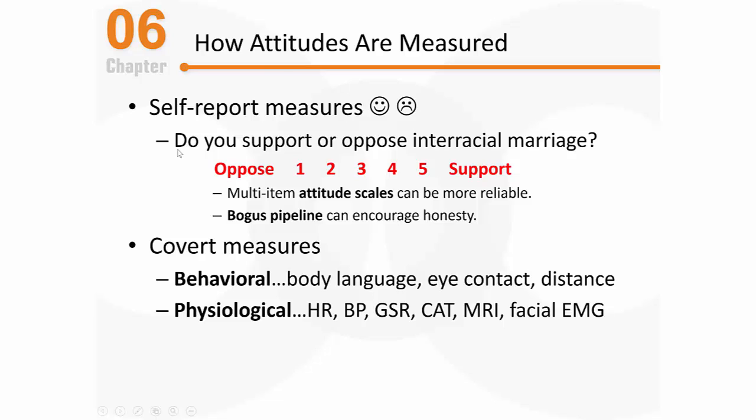Another way to assess attitudes covertly is using cognitive measures. Many cognitive measures rely on people's reaction times, because if you can react very quickly to a question you typically have a relatively strong, firm attitude regarding that topic. So measuring how quickly people respond is predictive of how they feel. That's the exact reasoning behind the IAT — the Implicit Association Test, which we've discussed previously. Let me talk about it again to make sure you really understand it.